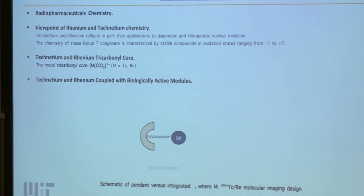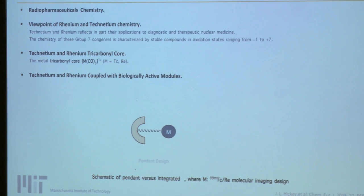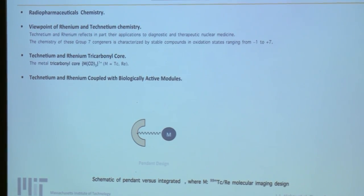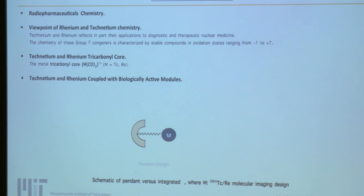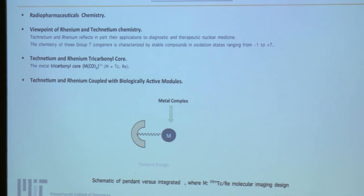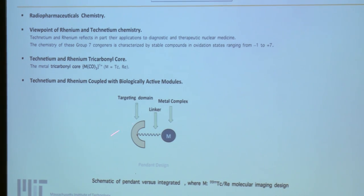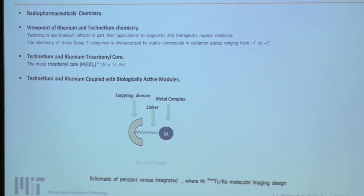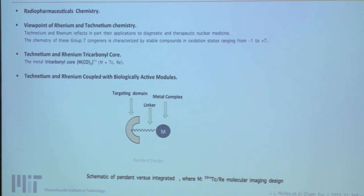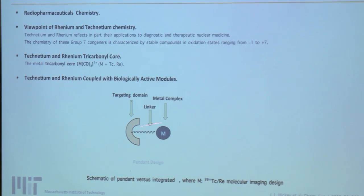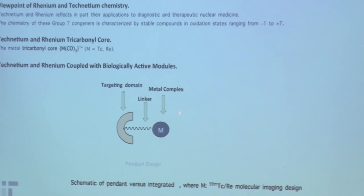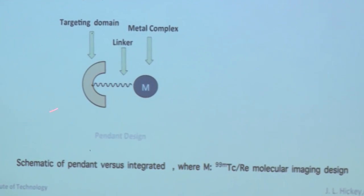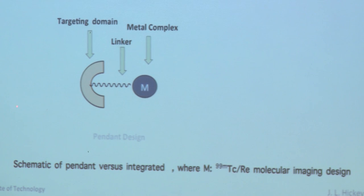There are two methodologies when designing technetium and rhenium coupled with biologically active molecules. The first one and the most important approach is the pendant design, which metal complex is attached with the targeting active site, bifunctionalized with the chelators. The linker here I use as a mean, a side chain of lysine. In this design, the metal complex has been allocated far away from the targeting active site.